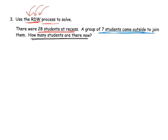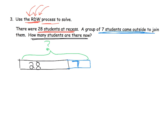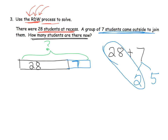If we wanted to draw it, one way would be to show we have 28 students and 7 more students join them, asking how many students do we have altogether. Teachers and parents, let your students come up with their own drawing. But we do want to solve the problem: 28 plus 7. Since 28 is pretty close to 30, it just needs two more, so let's decompose 7 to 2 plus 5. So 28 plus 2 is 30, plus 5 is 35. There are 35 students.